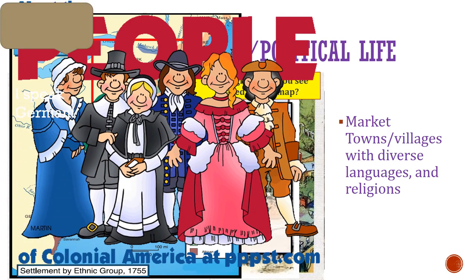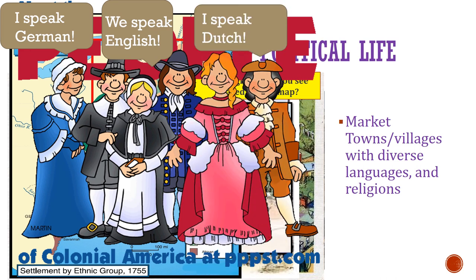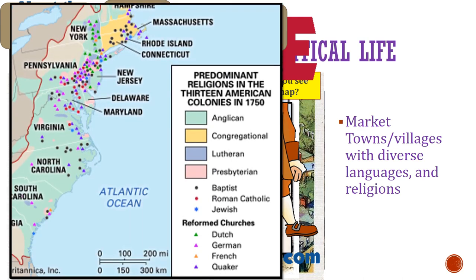Some spoke German, others spoke English, and still others spoke Dutch. Because of this, groups of people settled together in local towns that all spoke the same language. Because many of these colonies welcomed all religions, diverse religions resided in these colonies. Groups of people who shared the same religion would choose to build their farms near those who had this in common with them too.